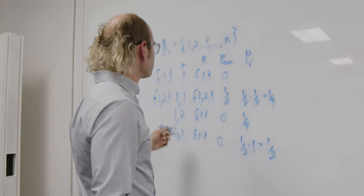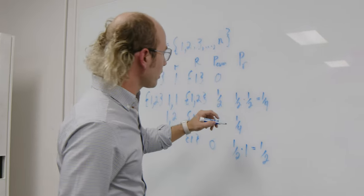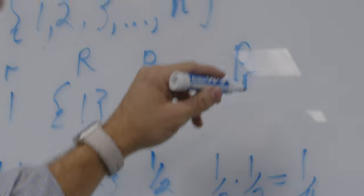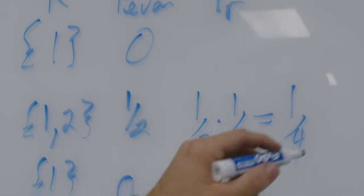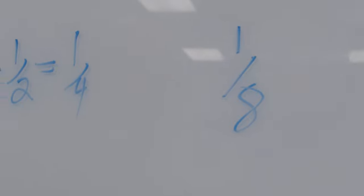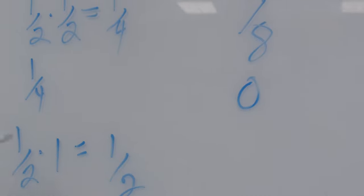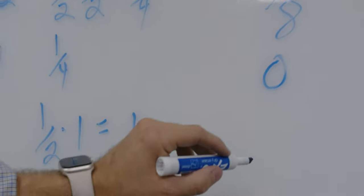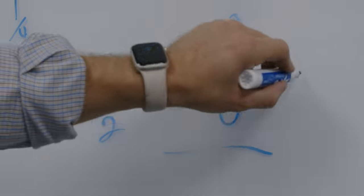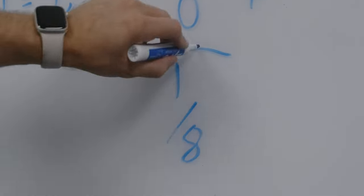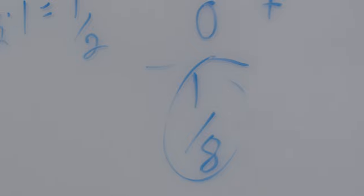To get the weighted probability we take the probability even and multiply it by the probability of that arrangement. So here we get one-eighth, here zero, and here zero. Then we sum down, and that is what we get for a set that contains only two members.